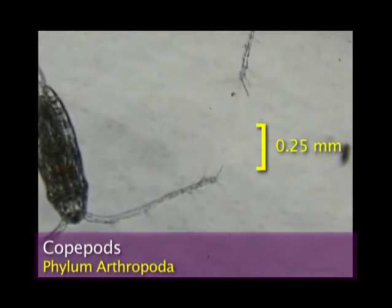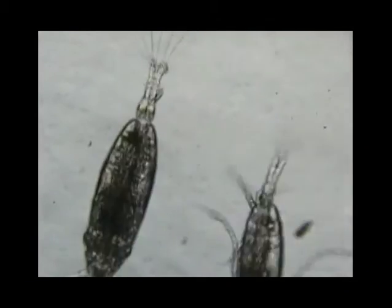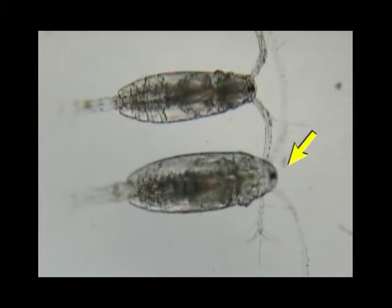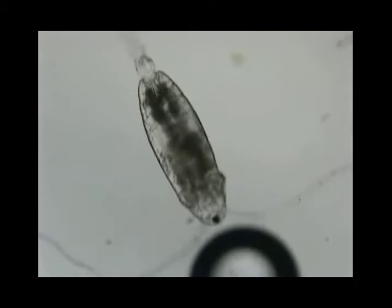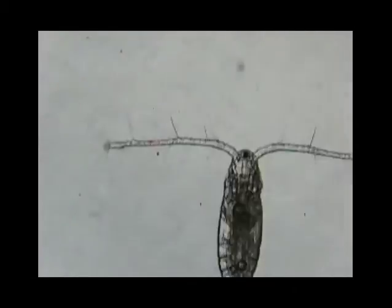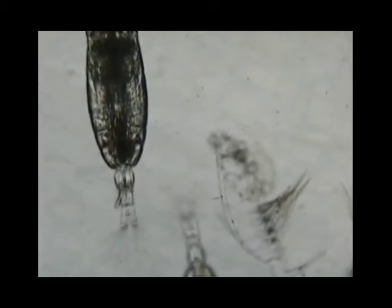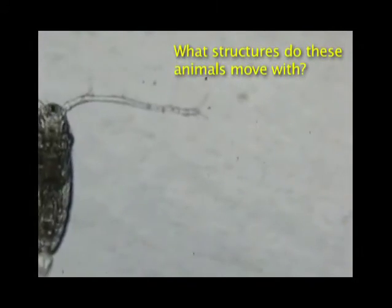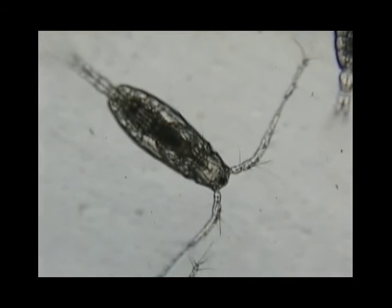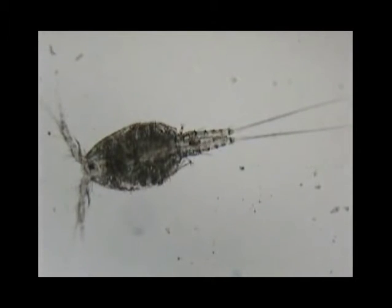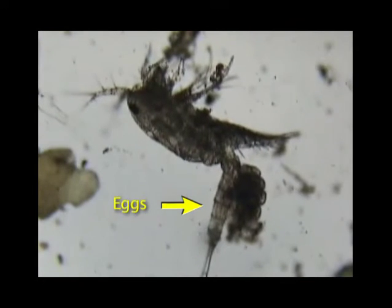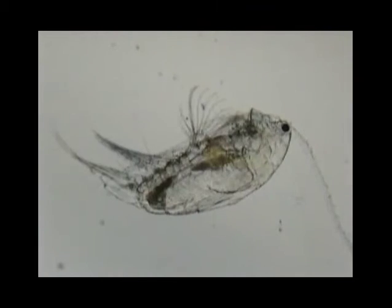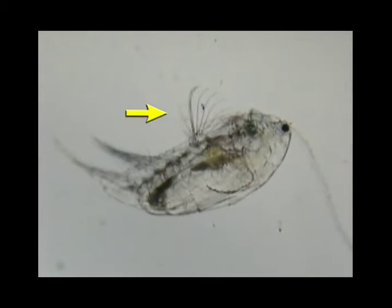The most abundant planktonic animals are the copepods. These tiny herbivores consume diatoms. Notice their single compound eye and two jointed antennae. Calanoid copepods, like these, have long antennae. Another group, the cyclopoid copepods, have smaller antennae. In this side view, the copepod's bristly mouthparts are visible.